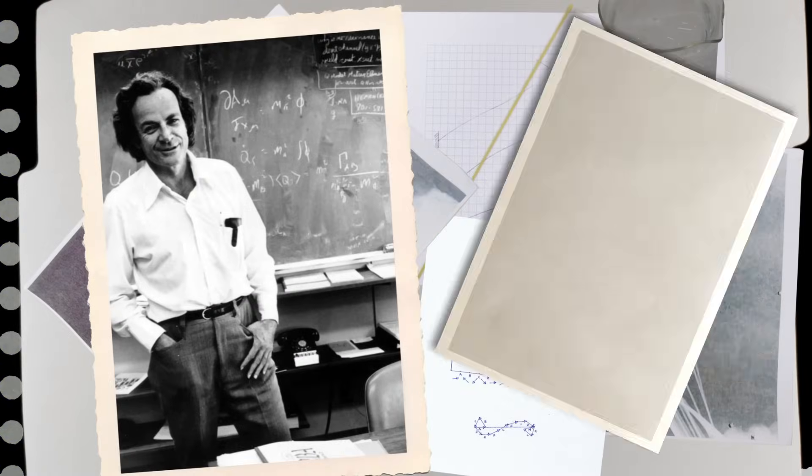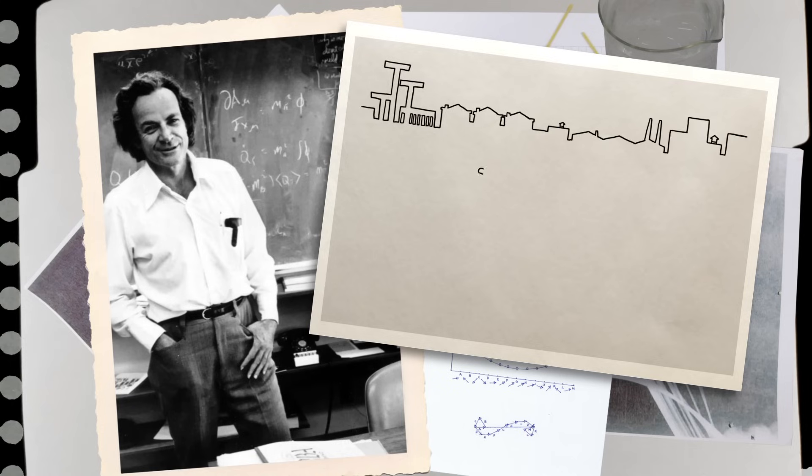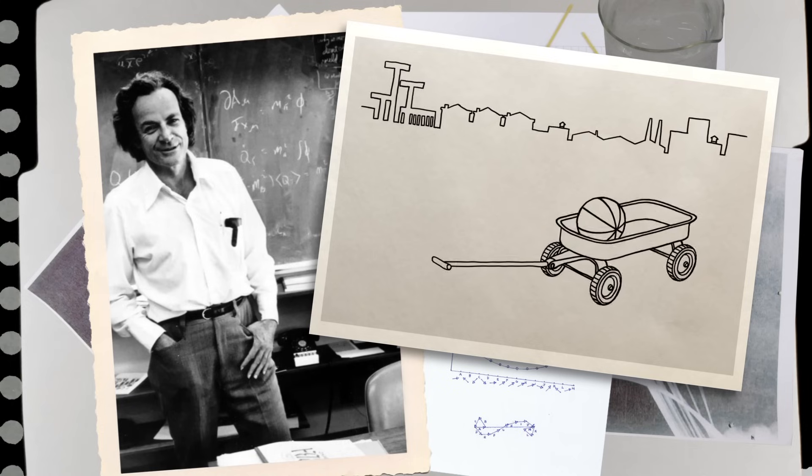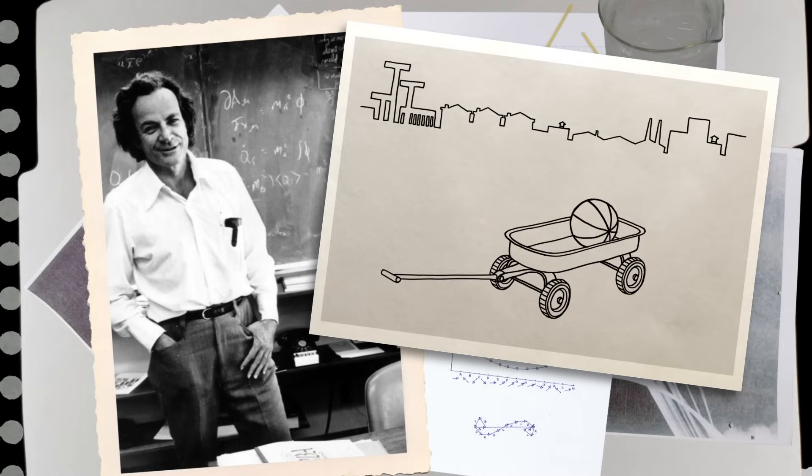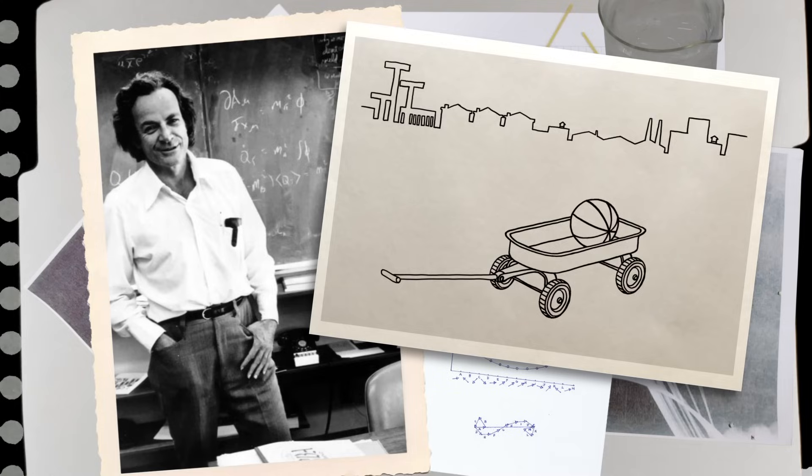When Richard Feynman was a young boy in Queens, he went for a walk with his dad and his wagon and a ball. And he noticed that when he pulled the wagon, the ball went to the back of the wagon, and he asked his dad, why does the ball go to the back of the wagon? And his dad said, that's inertia. He said, what's inertia?